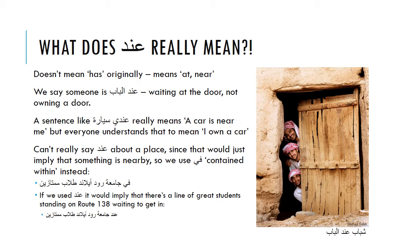This means you can't really use عَند about a place — like a university or building — since that would just imply something is nearby. Because if we're talking about a place, the locative meaning of عَند is more salient. So we use في to express possession for places. If we say في جامعة Rhode Island طلاب ممتازين, we mean within the space of URI there are great students. If we said عَند جامعة Rhode Island طلاب ممتازين, it would imply students standing out on Kingstown Road waiting to get into the university.